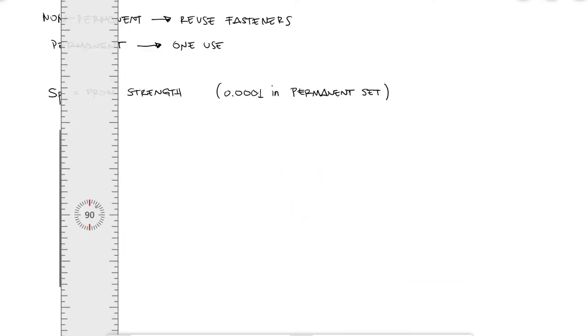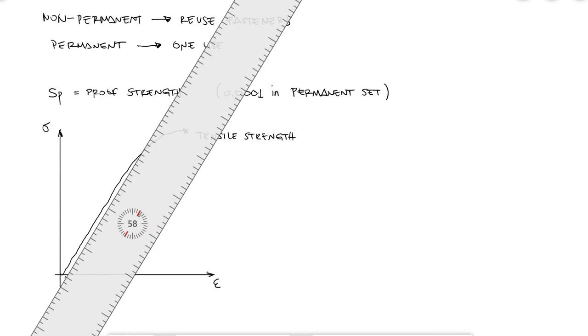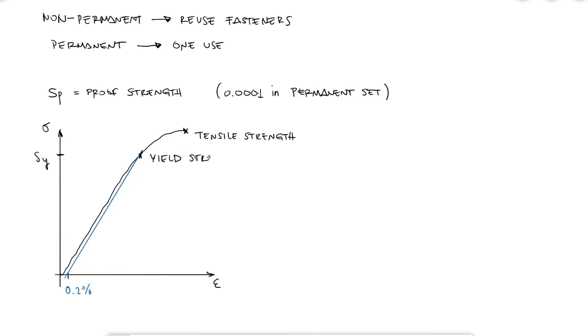If we look at a stress-strain diagram for bolt materials, we would see that there is no clearly defined yield point, and that it curves smoothly up to the point where we see fracture, in other words tensile strength. The yield strength would still be defined using the 0.2% strain permanent set definition, and we would see the proof strength below that.